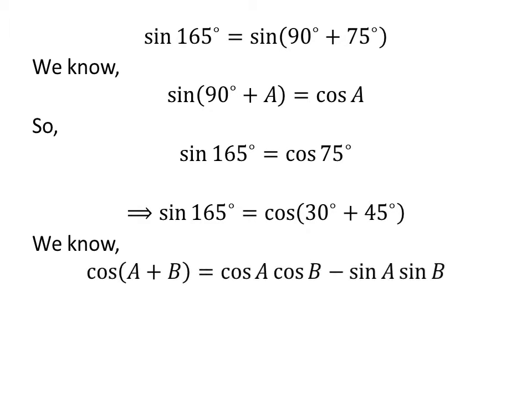We know cosine of A plus B is equal to cosine of A times cosine of B minus sine of A times sine of B.